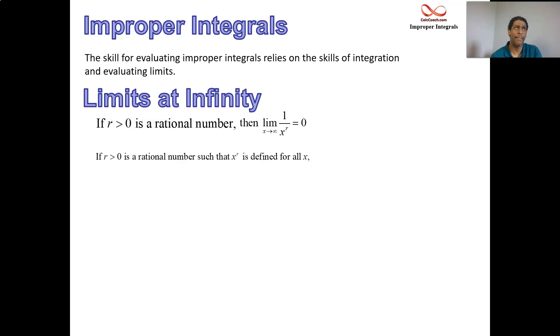You got to be careful with the negative infinity though, because you can't take the square root of a negative number. So any root or any kind of rational exponent, you got to be careful there. But as long as it exists, then you can say, yeah, that limit also is 0 as you go towards minus infinity.